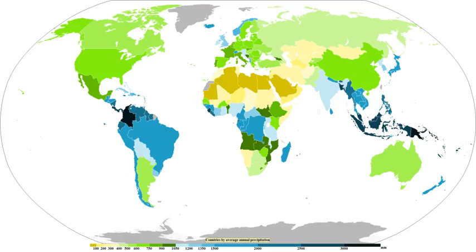Like other precipitation, hail forms in storm clouds when supercooled water droplets freeze on contact with condensation nuclei, such as dust or dirt. The storm's updraft blows the hailstones to the upper part of the cloud. The updraft dissipates and the hailstones fall down, back into the updraft, and are lifted again. Hail has a diameter of 5 mm or more. Within METAR code, GR is used to indicate larger hail of a diameter of at least 6.4 mm. GR is derived from the French word grelais.